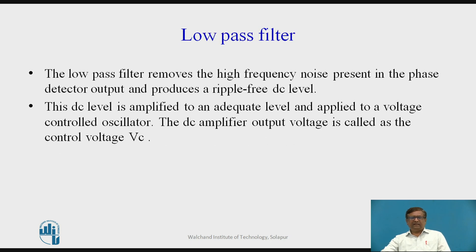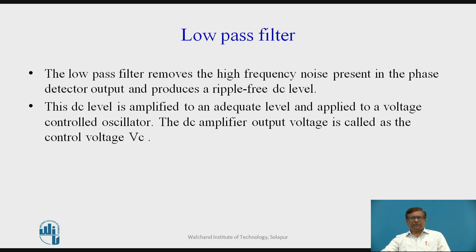The purpose of the low pass filter is to remove the high frequency components or high frequency noise present in the phase detector output, and to produce a ripple-free DC voltage given to the voltage controlled oscillator. This DC level is amplified to an adequate level and applied to the input of the voltage controlled oscillator. The DC amplifier output voltage is called the control voltage VC, which is then applied to the VCO.